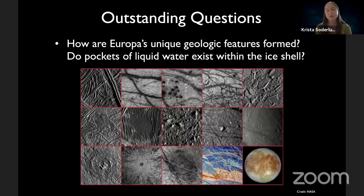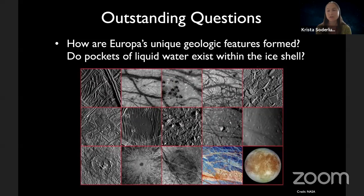Why do these bodies have liquid water when so far from the sun? The answer is tidal heating. As these satellites orbit their host planets, they're flexed back and forth, and that flexing creates heat, which maintains the oceans within these bodies. There are questions about the distribution of that heat — whether concentrated in the rocky mantle or in the ice shell — but it is thought to be enough to maintain this liquid water beneath the surface.